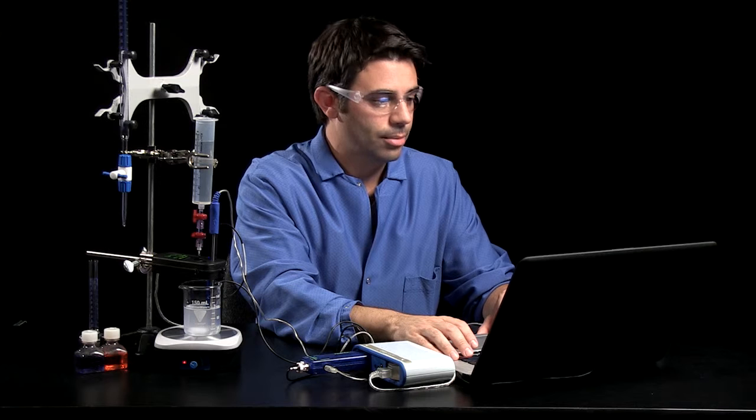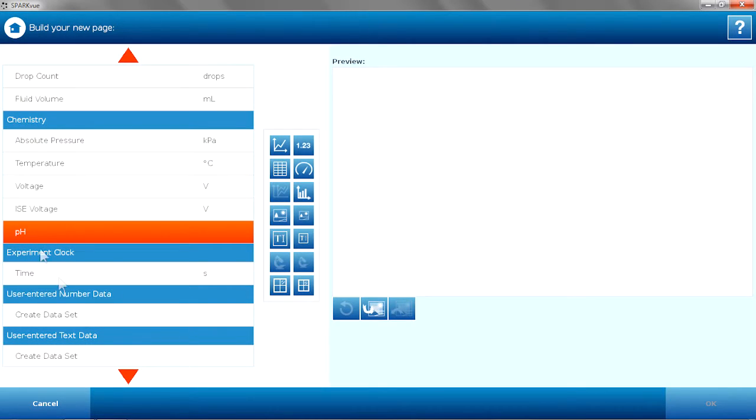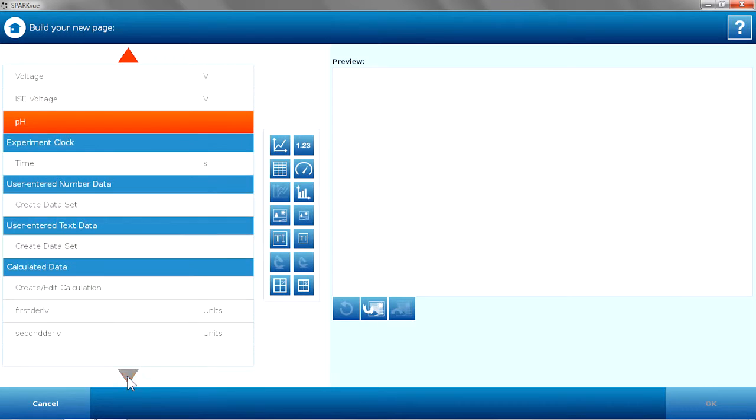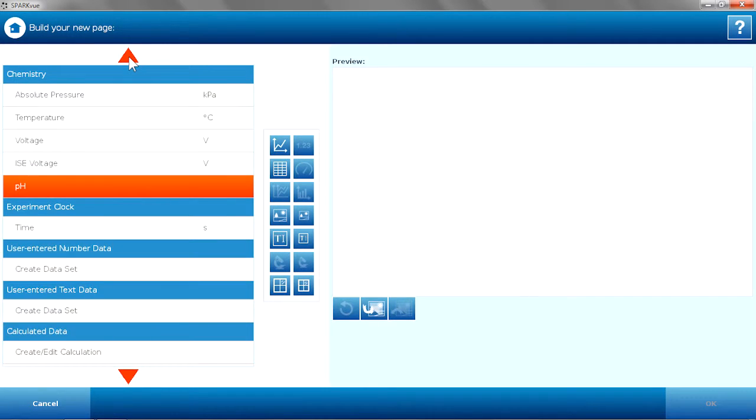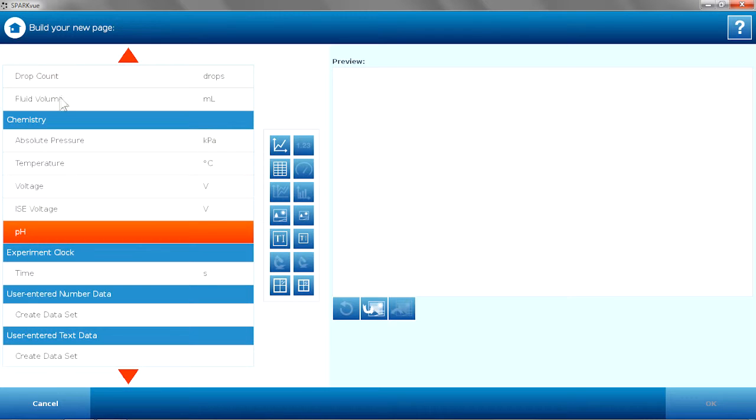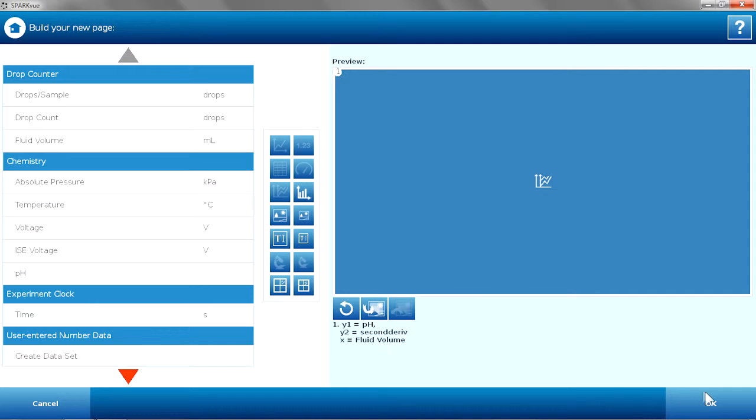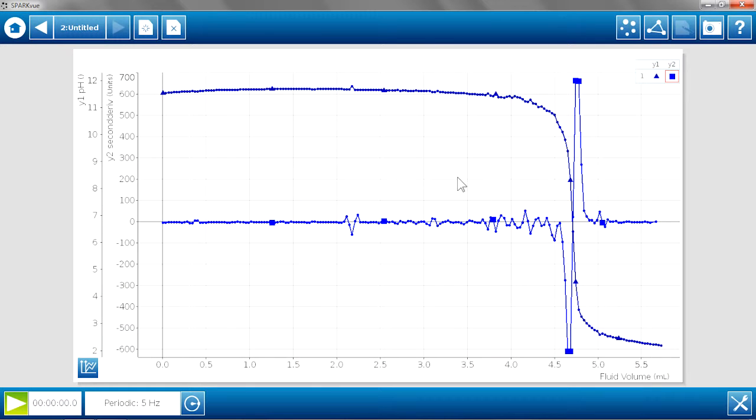And now I'm going to take advantage of SparkView's multiple y-axis. So I'm going to plot pH and the second derivative, both on the same graph, versus the fluid volume. Here's my multiple y-axis feature. And now we have both of those graphs coming in and showing you the equivalence point.